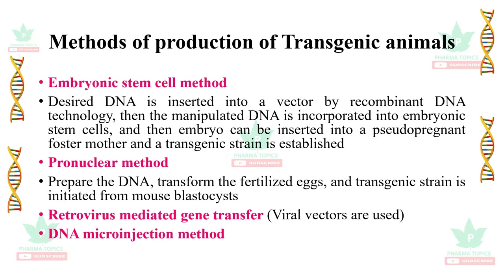The methods of production of transgenic animals include: the embryonic stem cell method, in which DNA is inserted into a vector by recombinant DNA technology, and then the embryo is inserted into a pseudopregnant foster mother and a transgenic strain is established. A similar method is the pronuclear method, in which the transgenic strain is initiated from mouse blastocysts.